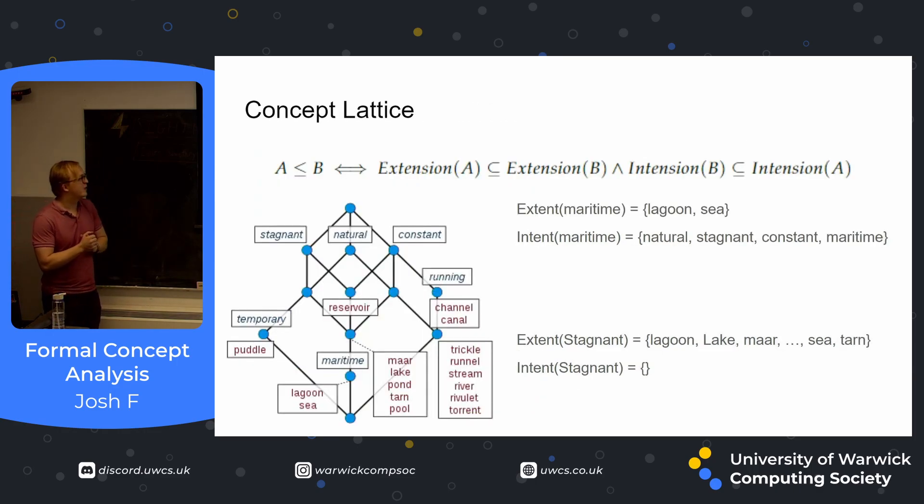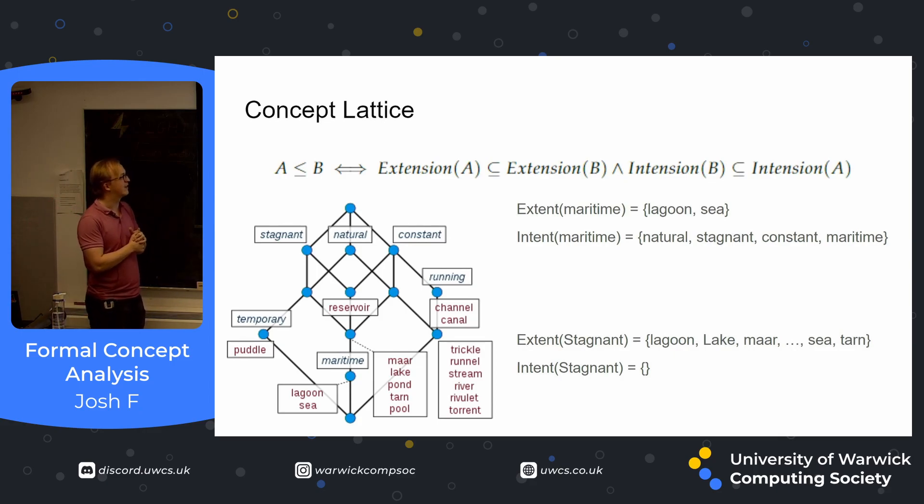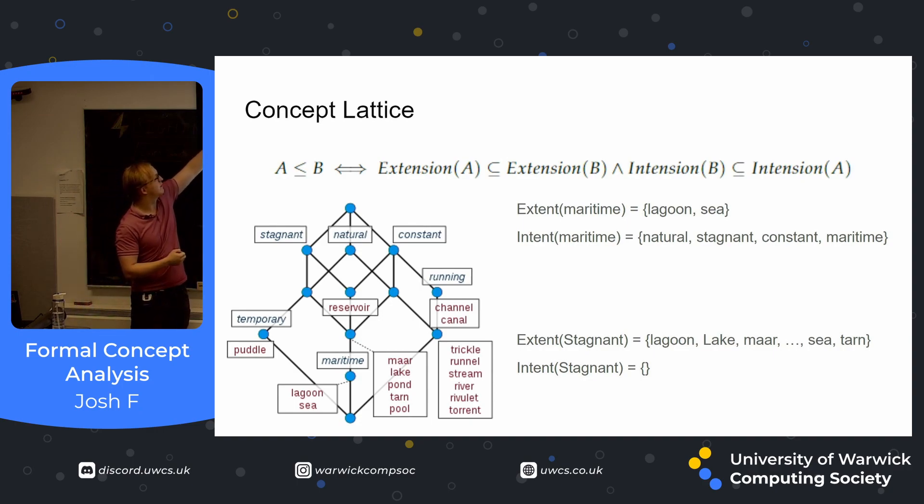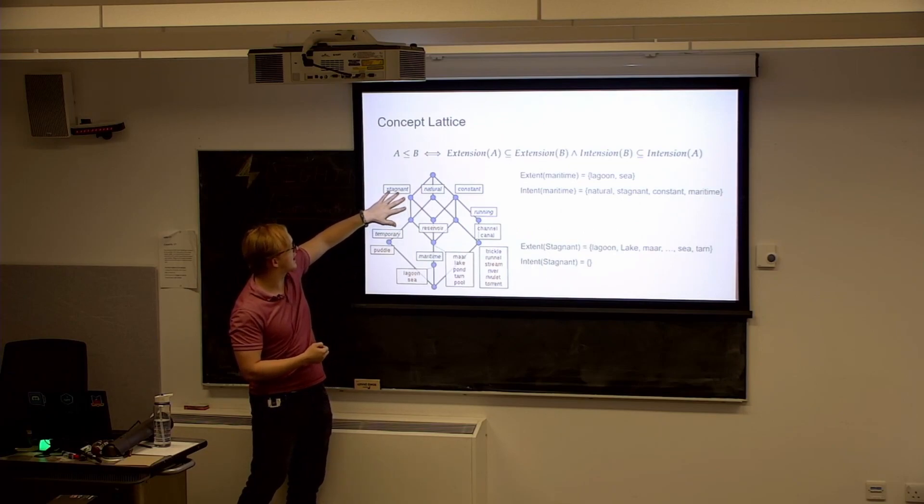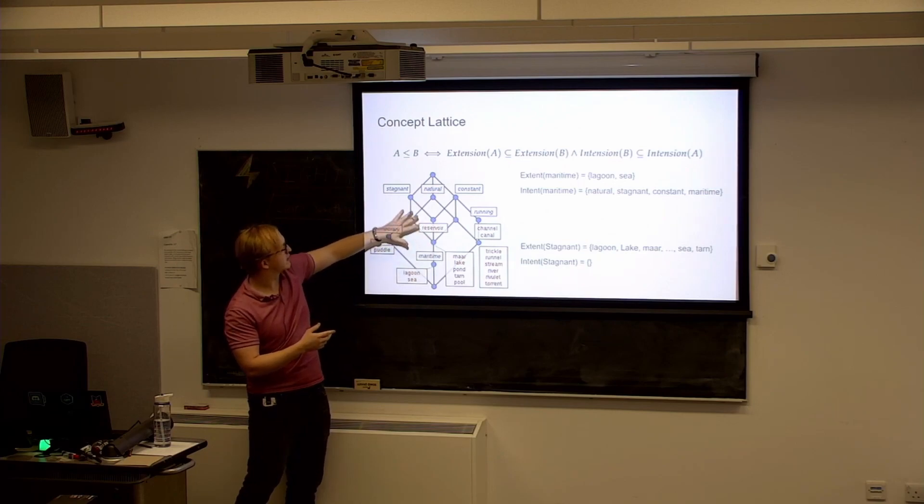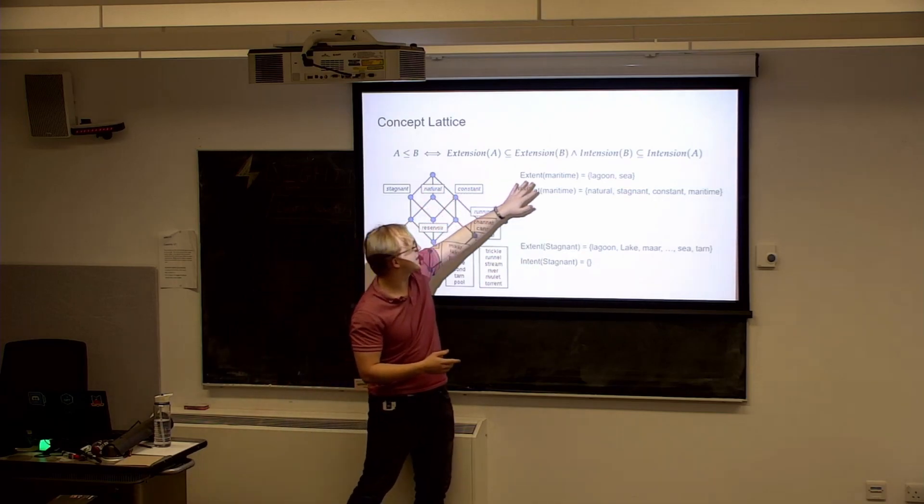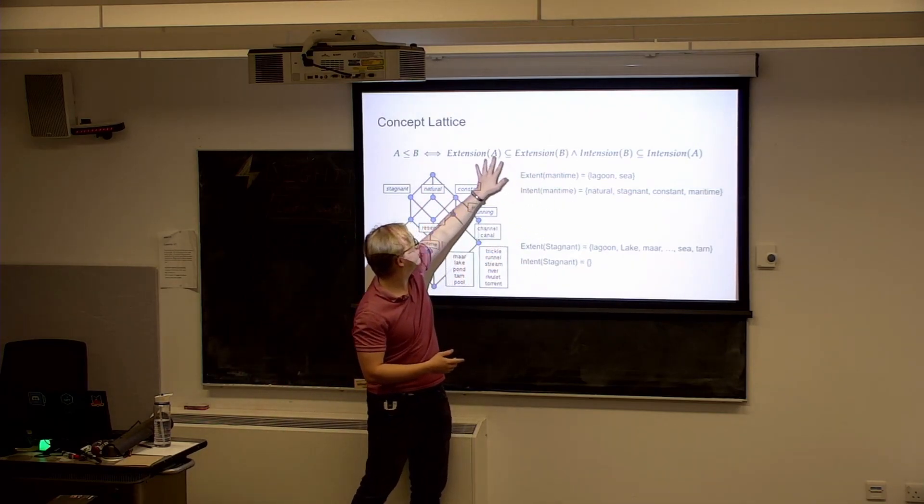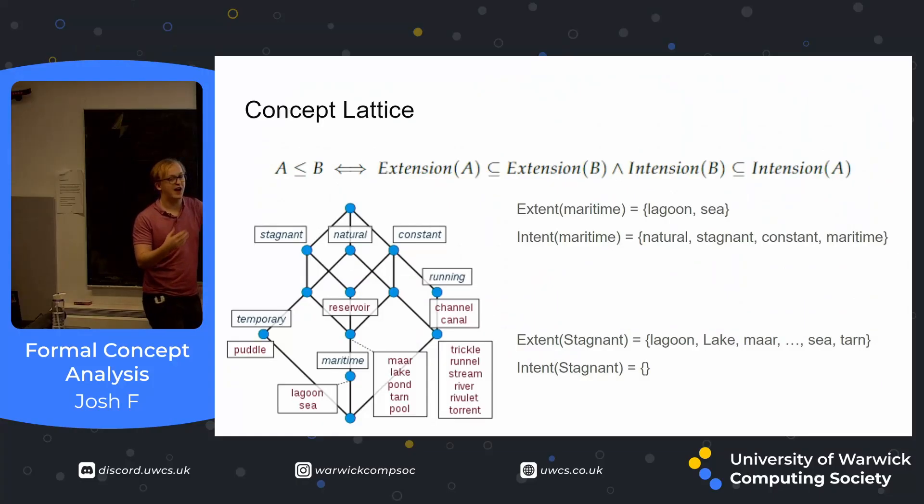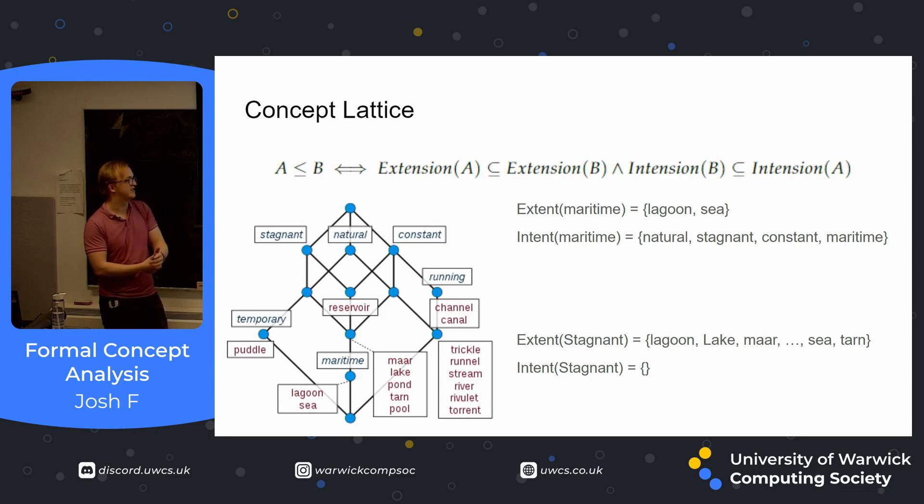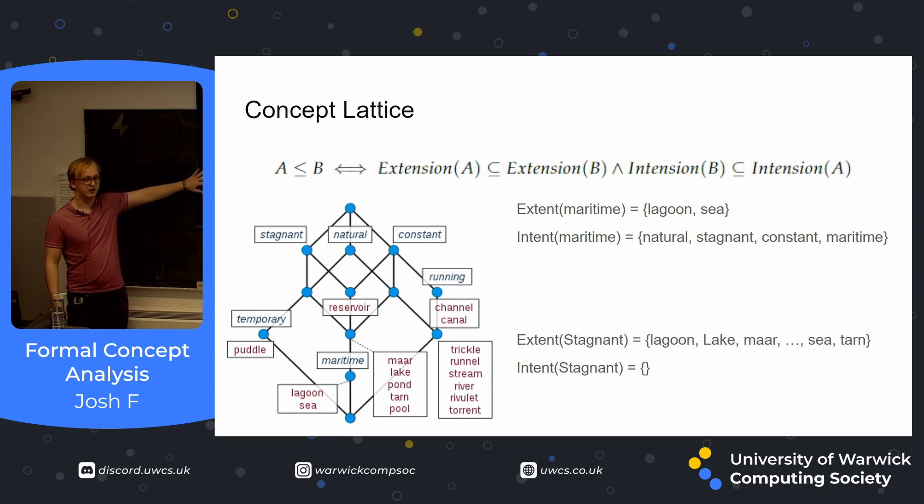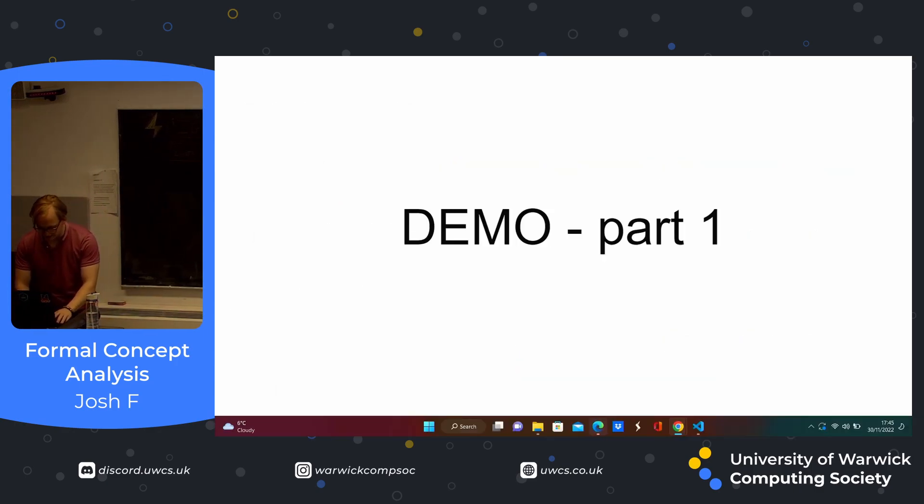Concept lattice. So we have this relation. Please don't turn off. I know it's some scary looking math but it's really not that much. So essentially we have our relation A to B. So for example, if B was stagnant and A was maritime from our previous slides, we can see this does go. And this can be shown by the fact that the extent of maritime is a subset of the extent of stagnant. And it just so happens this also is the reverse for intention all the time. So that's why we have the AND. It's not necessary for it to be there but it does work. And we can generate a partial order or a concept lattice like this.